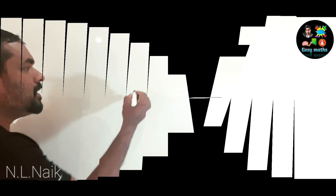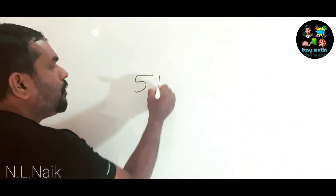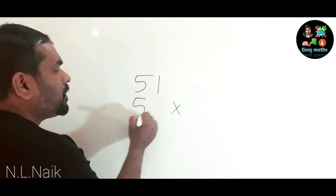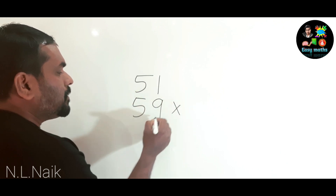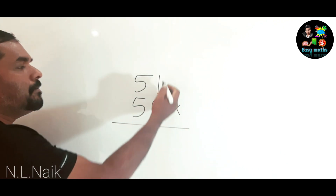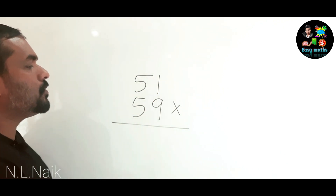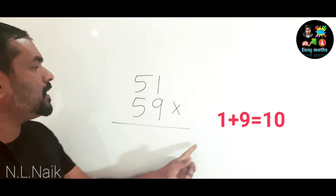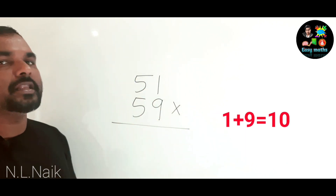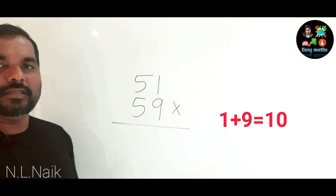Let's take another example: 51 into 59. The tens digit is 5 in both numbers. The next consecutive number after 5 is 6.